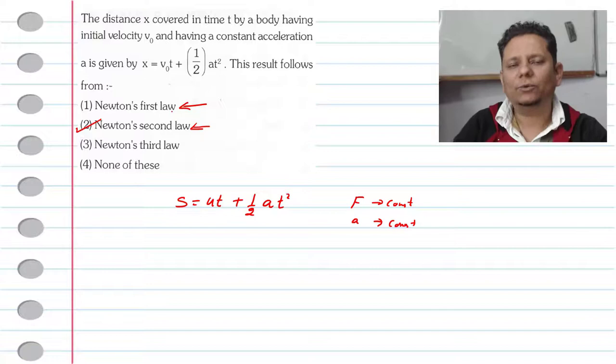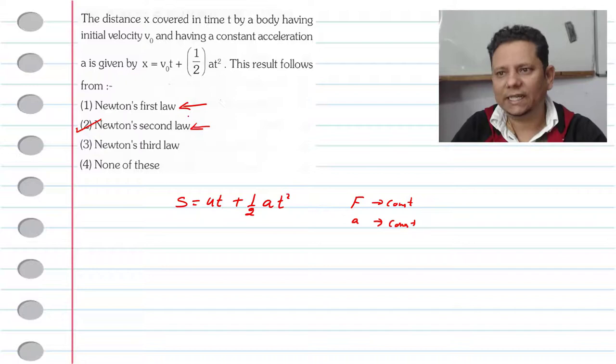Unless an external net force is applied, there will be no change in motion. An object at rest will remain at rest, and an object will continue moving at the same speed.